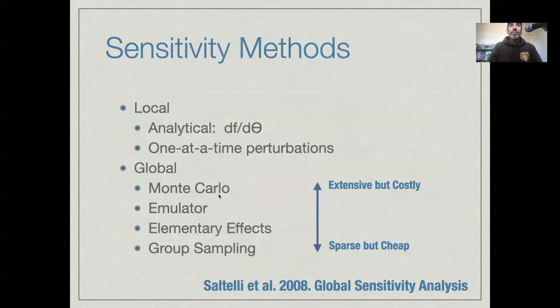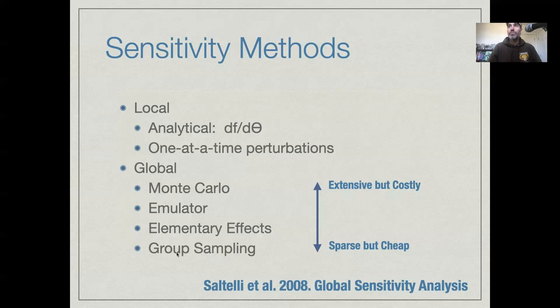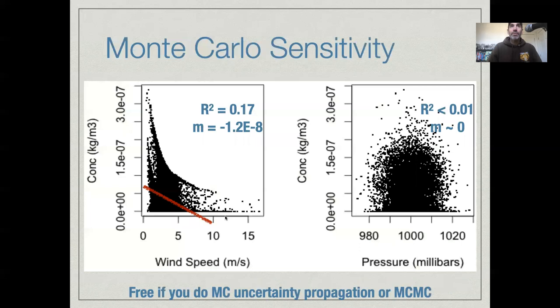So because of this idea of the curse of dimensionality, that exploring parameter space gets harder, the bigger it is, there's a number of approximations to global sensitivity analyses that involve trade-offs between how sparsely they sample. So something that samples intelligently but sparsely may be more computationally efficient, something that samples parameter space more broadly is going to be more costly, but it's going to give us a more extensive understanding. There is an optional reading up on Blackboard from the Saltelli book, just the first chapter. It's a really great book and a really accessible introduction to sensitivity analysis.